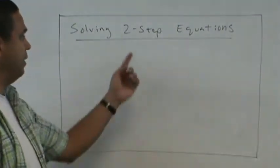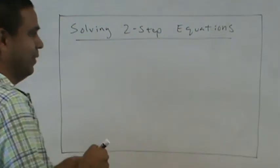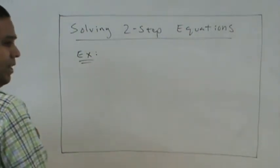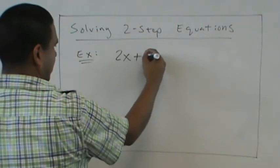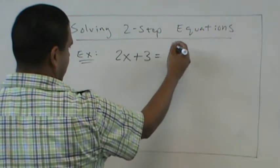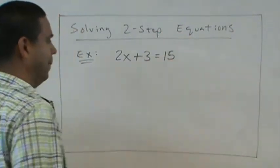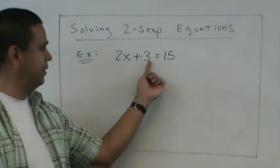It's the same thing with two-step equations, but now we just do the inverse twice. So we'll just start with an example and we'll write down the steps. So if we have 2x plus 3 equals 15, that's our first example.